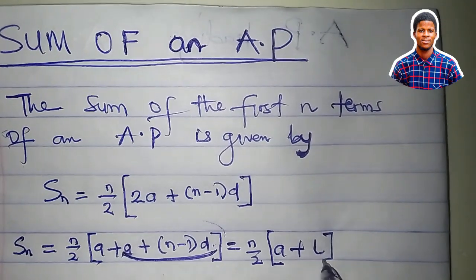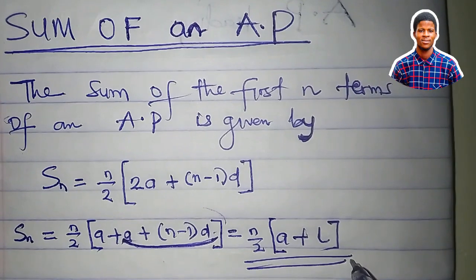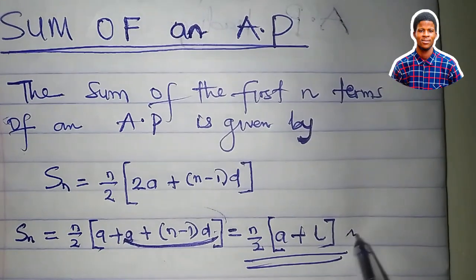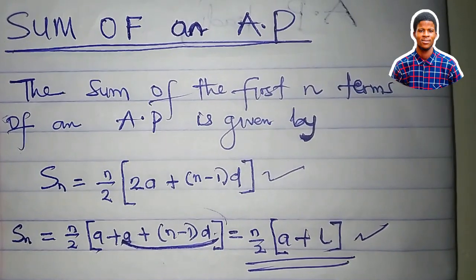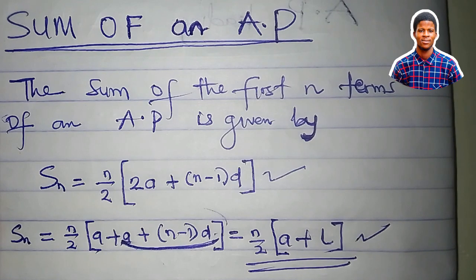because last term equals a plus (n-1)d. So these two formulas work to calculate the sum of the first n terms of a linear sequence.